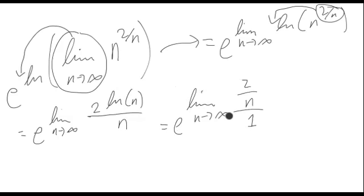So derivative of the top is 2 over n. Derivative of the bottom is just 1. Take a limit here that this part looks like this goes to 0. So we have e to the 0 which is 1, a number which is what we wanted.